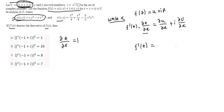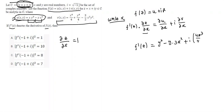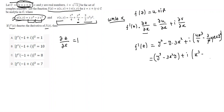Differentiating u partially with respect to x gives y³ minus 3x²y. Then differentiating v partially with respect to x: the first term gives 4x³, the constant 4y term vanishes, and the next term gives minus 3/2 times 2x times y, which simplifies. Proceeding further: y³ minus 3x²y plus i into (x³ minus 3xy²). So this is our f'(z).